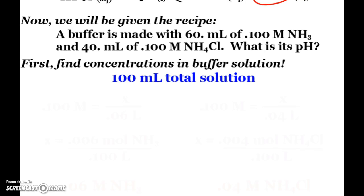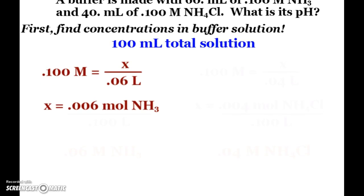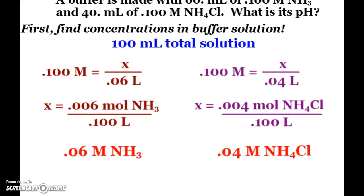So since we're experts at molarity, my 0.1 molar 60 milliliters of ammonia, there is 0.006 moles of ammonia in that 60 milliliter solution. But when I mix it together and put it into the total of 100 milliliters, it's a 0.06 molar solution of ammonia. And I can do the same with the ammonium chloride, of course, only really focusing on the ammonium. I find out that I have a 0.04 molar ammonium chloride solution. So now this becomes just like one of our common ion equilibrium problems.